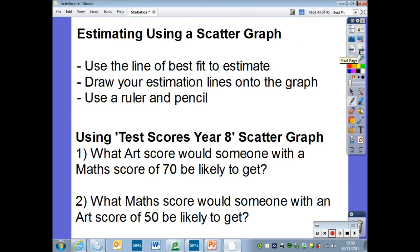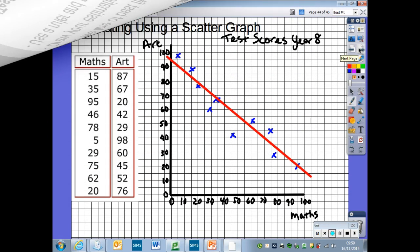A key use for scatter graphs is for estimating. We use the line of best fit to estimate. We draw our estimation lines onto the graph using a ruler and a pencil. So we're going to use our test scores year 8 scatter graph to answer these questions. Number one, what art score would someone with a math score of 70 be likely to get? And number two, what math score would someone with an art score of 50 be likely to get?